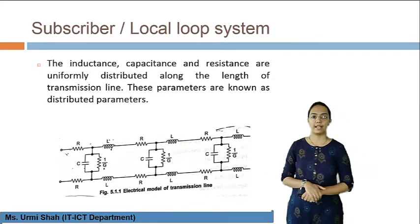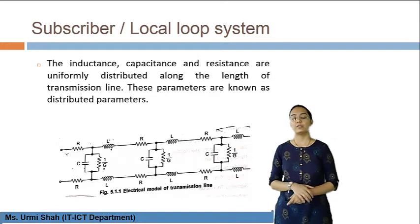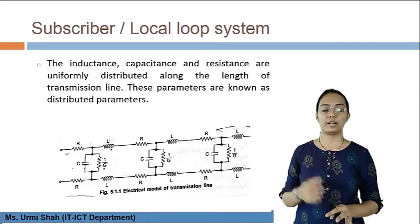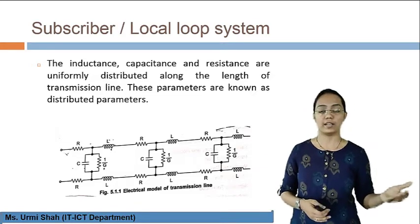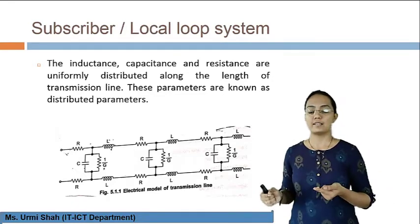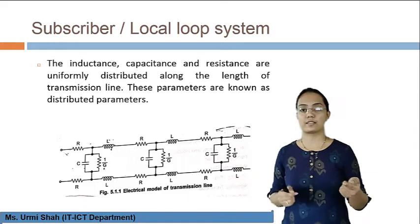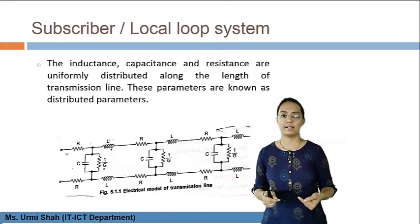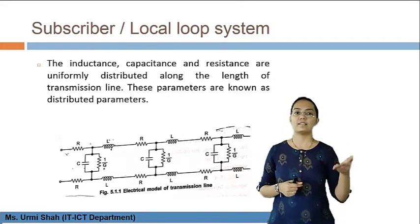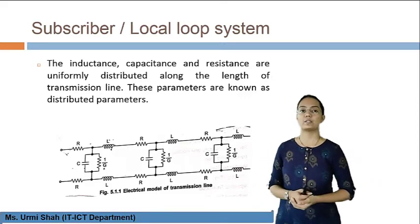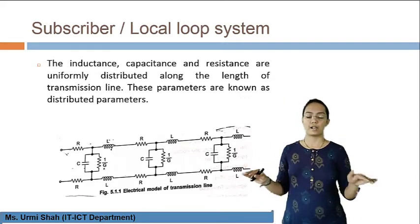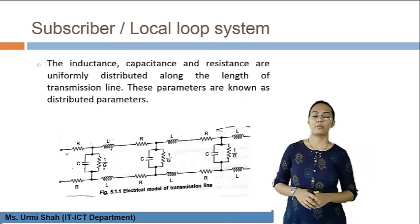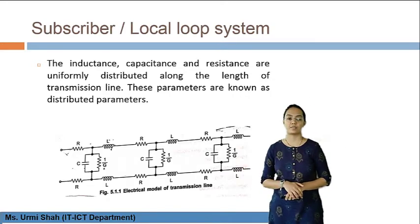As shown in the diagram, this is the electrical model of a transmission line. The parameters included in this model are R, L, C, and G — resistance, inductance, capacitance, and conductance. R is resistance, L is inductance, C is capacitance, and G is conductance. The inductance, capacitance, and resistance are uniformly distributed along the length of the transmission line. These parameters are known as distributed parameters.